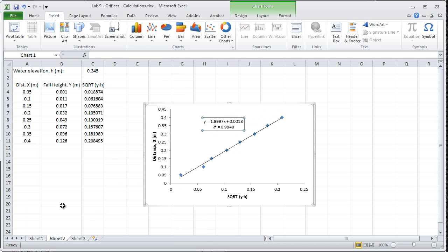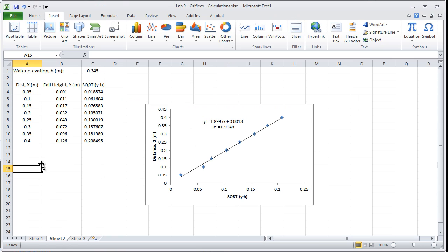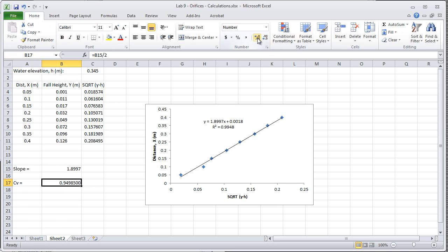It's a pretty nice linear fit, but what we learned from the instructions is that the slope of this line is 2 C sub V. One of the things on this lab is to find what is C sub V. The slope I can read right off of there is 1.8997. So C sub V is going to be this slope divided by 2. What we've calculated is a C sub V of about 0.95.